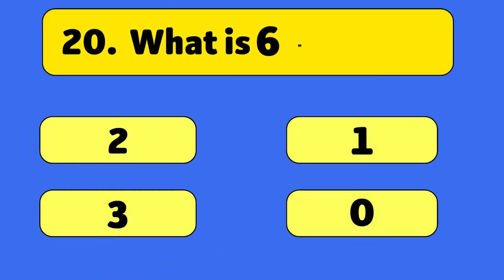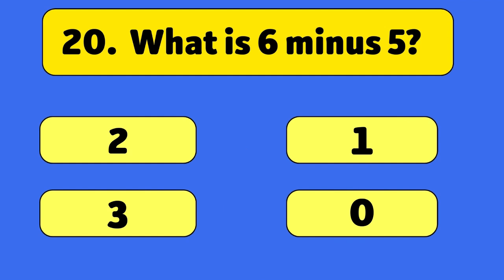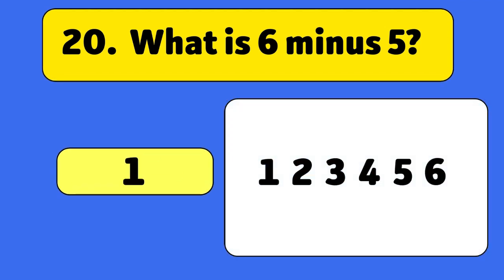What is six minus five? One. Start with six and take away five, and we're left with one.